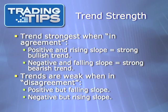The secondary purpose of slope is to show trend strength. Simply stated, a trend is strongest when it agrees — i.e., when slope is both positive and rising, or both negative and falling. When slope is positive but falling, for instance, the positive trend is not as strong. The same can be said of a negative trend when slope is negative but rising.